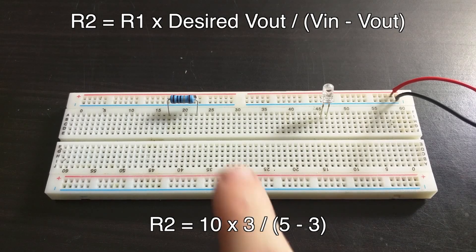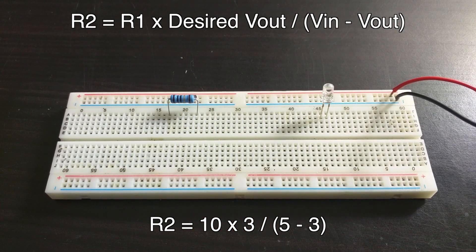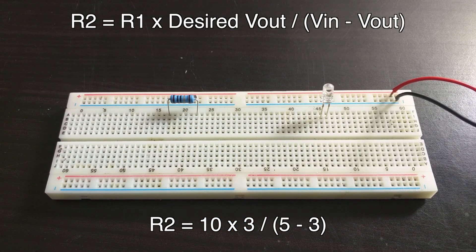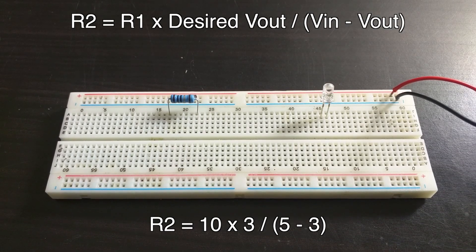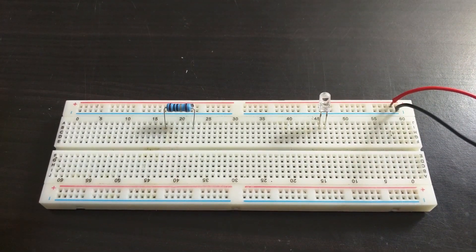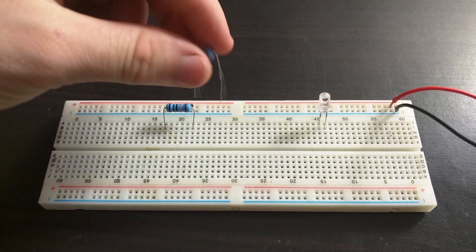So in this case, the resistance of resistor 2 will be equal to 10 times 3 divided by the sum of 5 minus 3, which gives us the result of 15 ohms. And just so conveniently, I have a 15 ohm resistor.